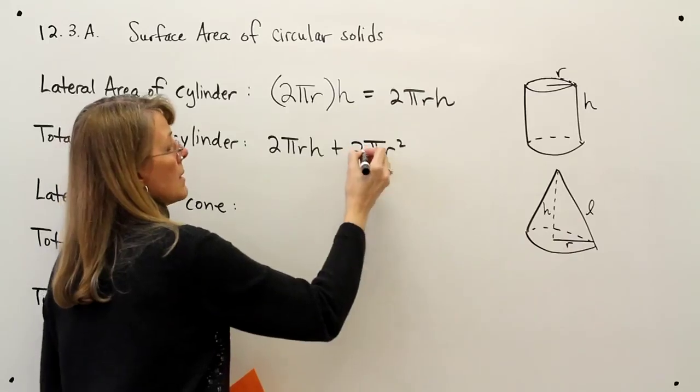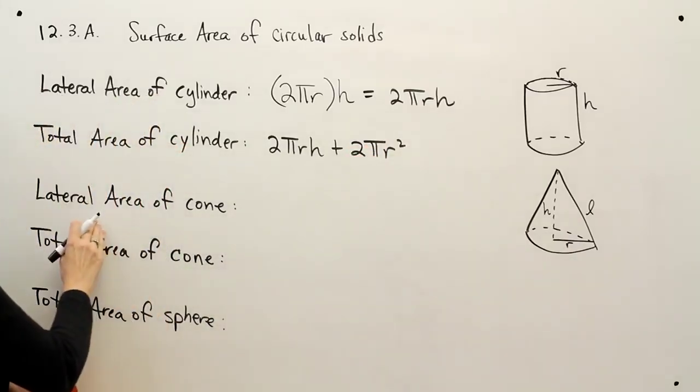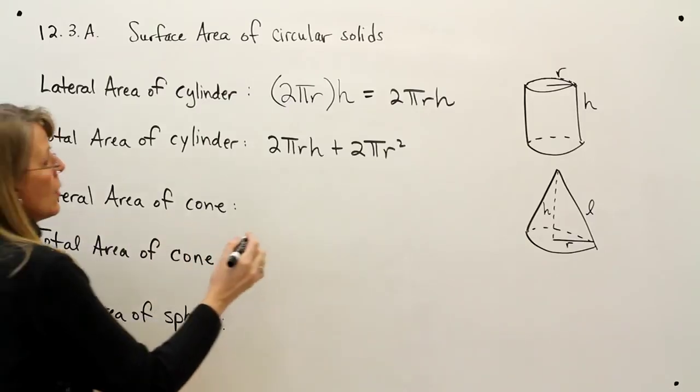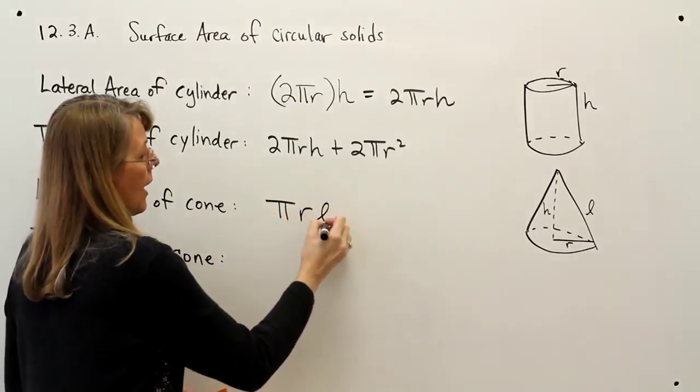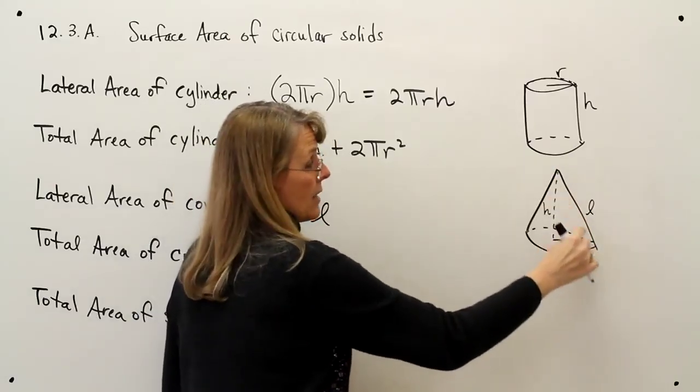Another one for the top means I have 2πr² added on. The lateral area of a cone, the formula is πrl, where l represents this slant edge on the cone.